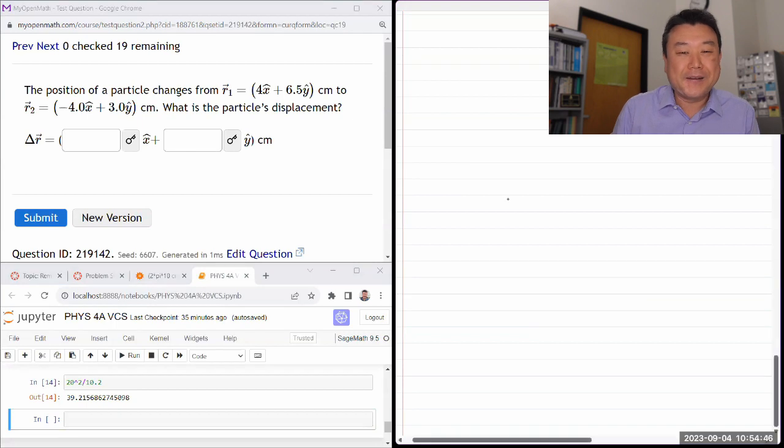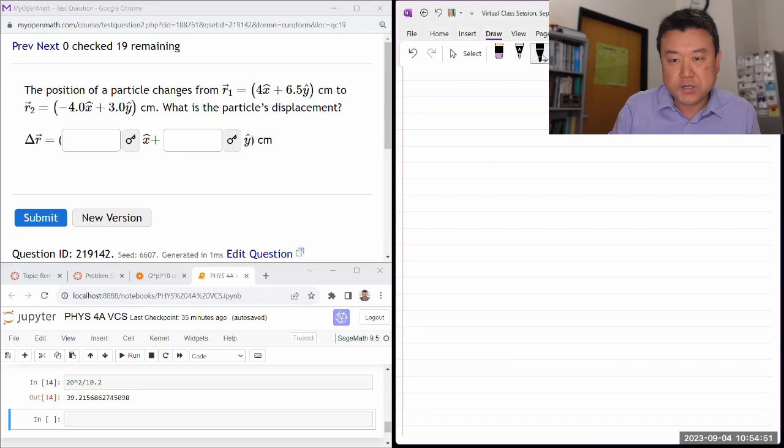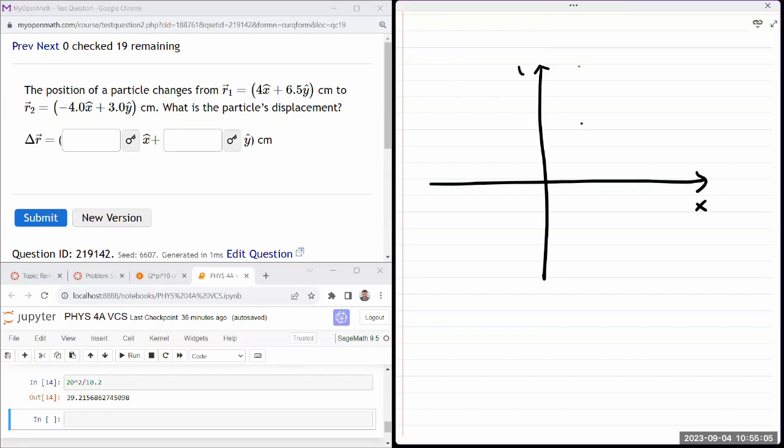So this question describes the position of a particle that's changing. So let me kind of sketch it out. If you are imagining an axis, so this is my x-axis, y-axis. Let me just mark one, two, three, four.